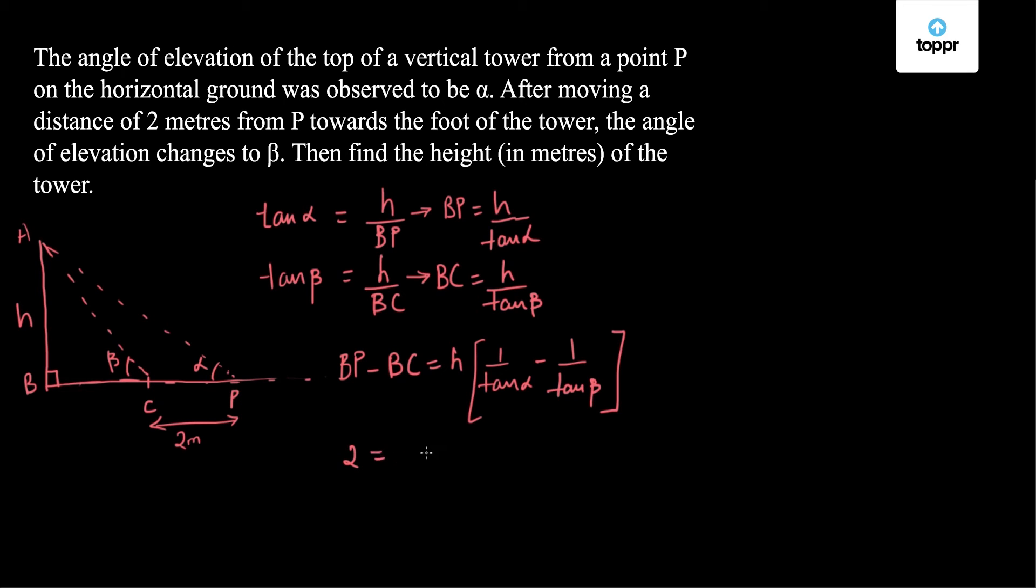So I have 2 is equal to H times (tan beta minus tan alpha) upon (tan alpha tan beta). Therefore, H is equal to 2 times tan alpha tan beta upon (tan beta minus tan alpha).